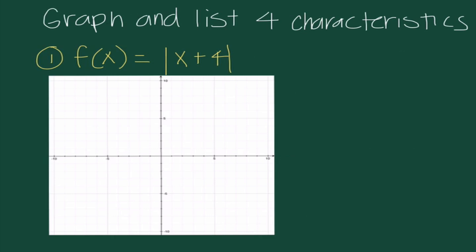Number 1: graph and list the four characteristics for F of X equals the absolute value of X plus 4. The first thing we list is our vertex. To find the X value, I take the opposite of the value inside the absolute value symbol — since it says X plus 4, I write an X value of negative 4. The Y value K is whatever we're adding after; since there's nothing, our vertex is at negative 4, 0.